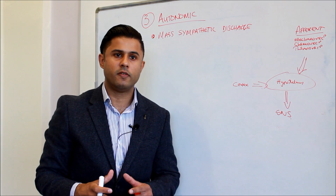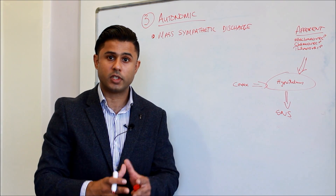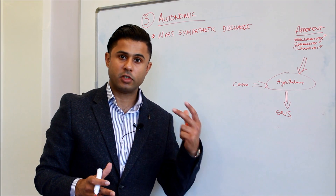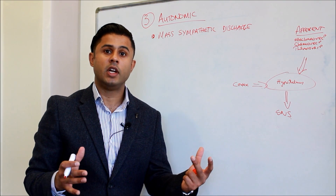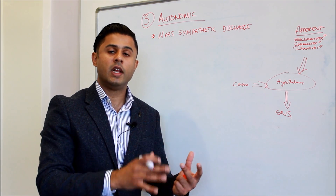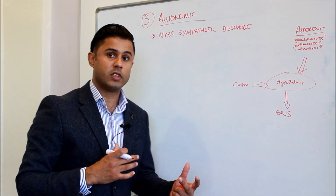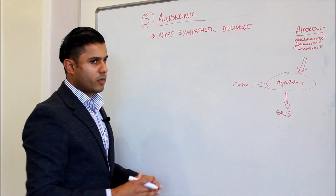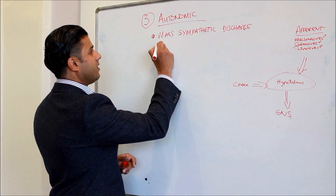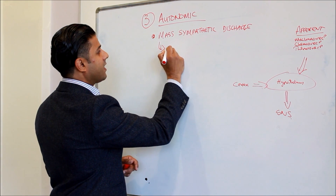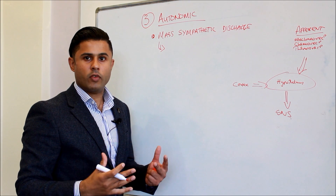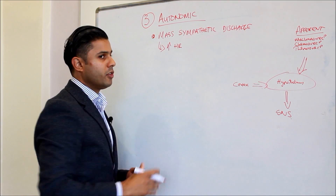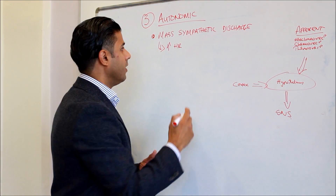That will then activate the autonomic nervous system to cause an increase in sympathetic nervous system activity. Now the activity of the sympathetic nervous system is multifactorial, so it's causing a wide variety of changes in the body. Some of them are to increase the blood pressure, some of them are to increase the heart rate, and some of them are to increase venous return. One of the most important things that the sympathetic nervous system does is it acts on the heart rate - it acts on the sinoatrial node and it increases heart rate - and it does that by the release of noradrenaline.